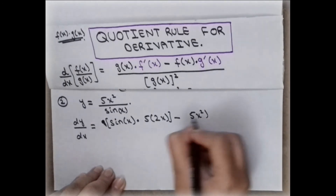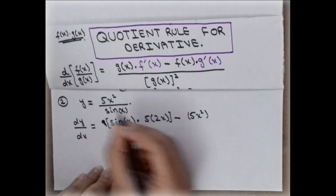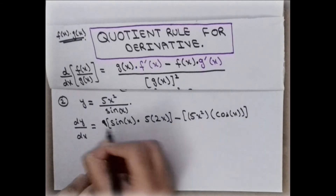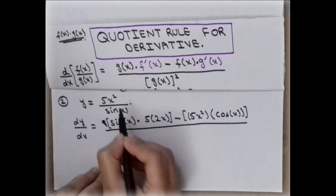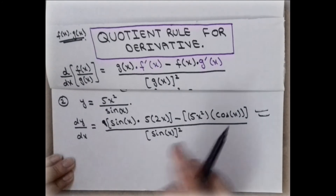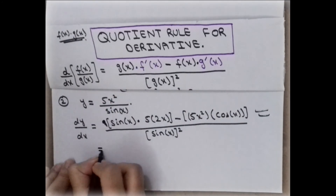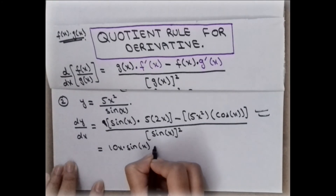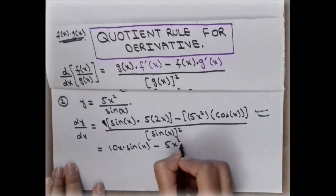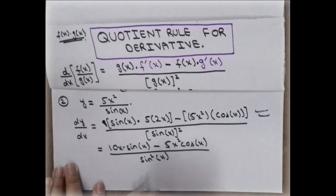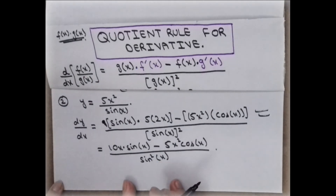The sign is minus. Write the upper term 5x squared as it is, and take the derivative of the denominator sin x, which is cos x. Divide everything by the square of the denominator, sin squared x. This is a very important step where we apply the formula. So the result is 10x sin x minus 5x squared cos x, divided by sin squared x. This is the final answer.